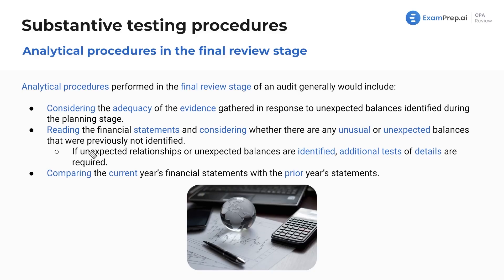The final analytical procedures serve as a catch-all net. You did everything and think you did it properly, but then you perform this third level of analytical procedures after planning and testing. If you find anything unexpected at this stage, you have to go back to the testing stage and continue gathering evidence for reasonable assurance.